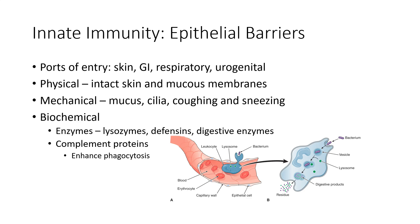We also have mechanical barriers that can help move microbes out of our system. This includes things like our mucus and our cilia — those hair-like projections that can push microorganisms out of our system — and things such as coughing and sneezing that we do in response to invasion by a microorganism. And then we have biochemical barriers, including our enzymes such as lysozymes, defensins, and digestive enzymes that can help degrade or break down parts or all of microbes.